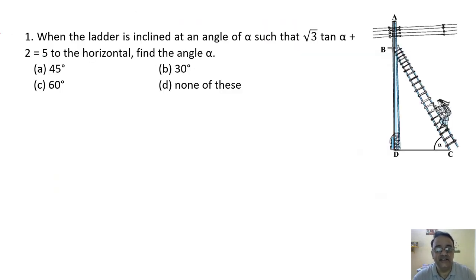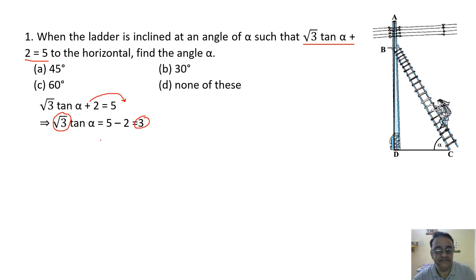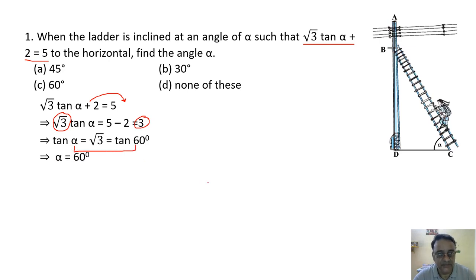Question 1: When the ladder is inclined at an angle alpha such that 3√3 tan α + 2 = 5 to the horizontal, find angle alpha. So √3 tan α + 2 = 5 is given. Shift +2 to the other side, it becomes −2. We compare the angle and get alpha = 60 degrees.